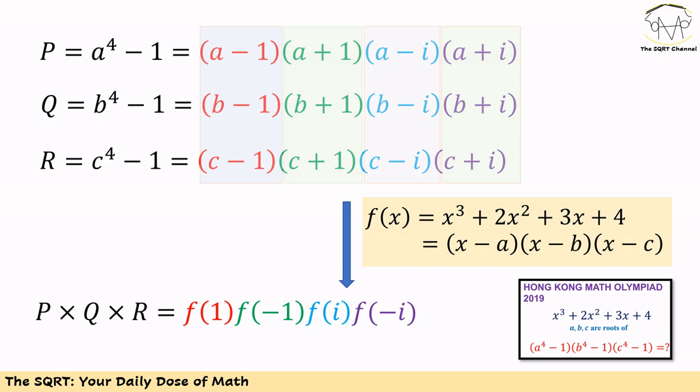If we multiply p by q by r we get the expression we are asked to evaluate: (a⁴ minus 1)(b⁴ minus 1)(c⁴ minus 1). On the other hand we will have (a minus 1)(b minus 1)(c minus 1), and you can see that this product is simply f(1). We also have (a plus 1)(b plus 1)(c plus 1), which is just f(minus 1).